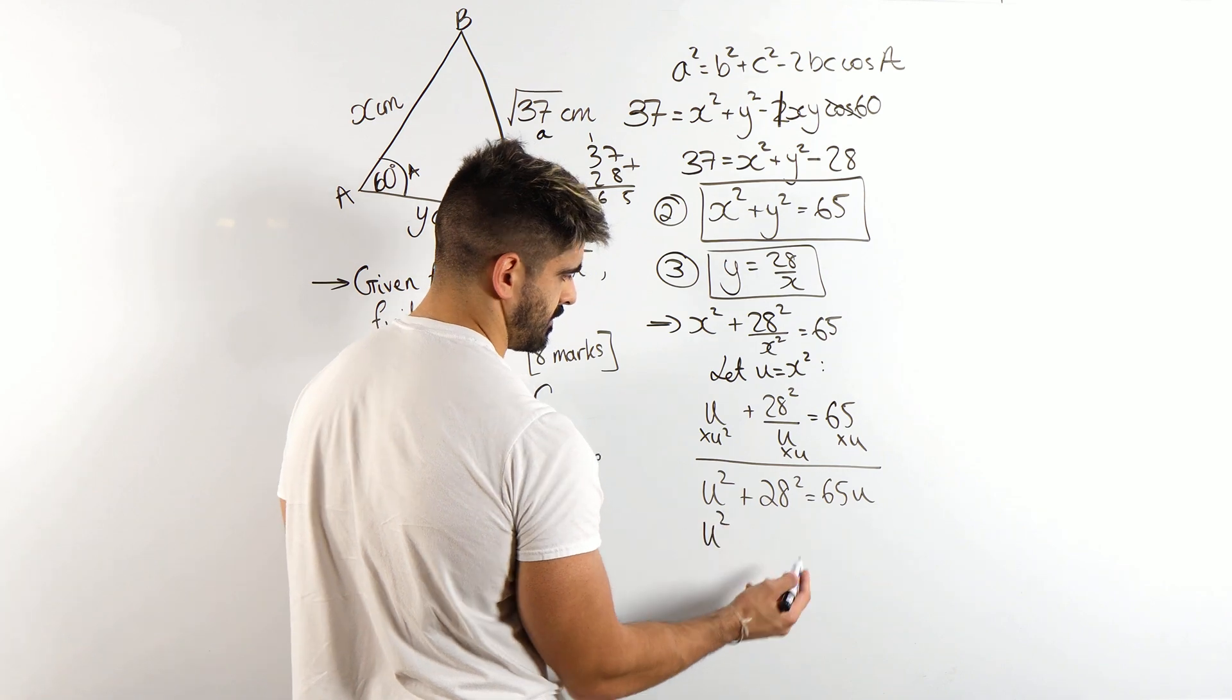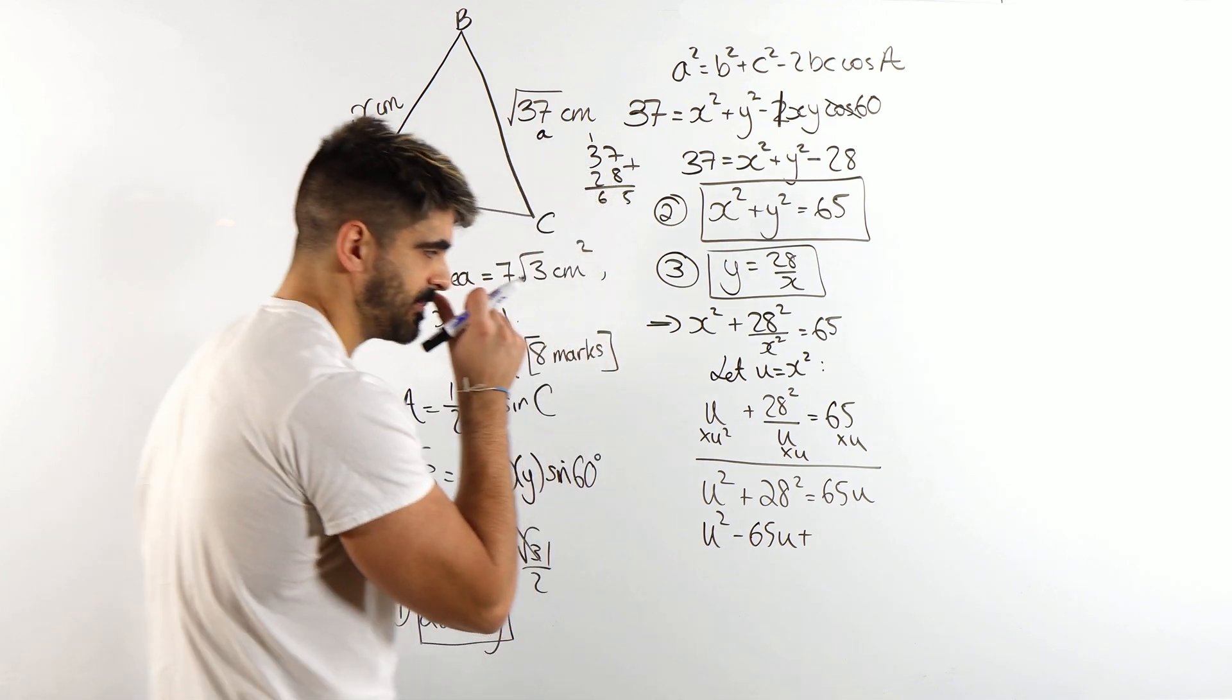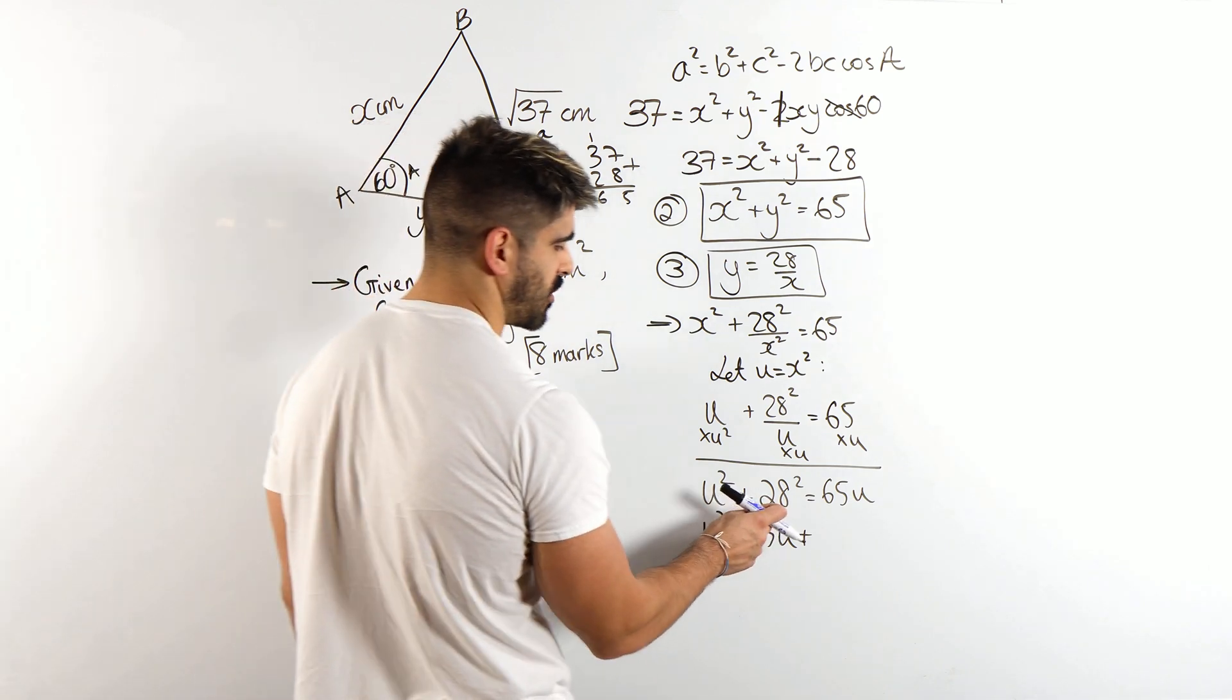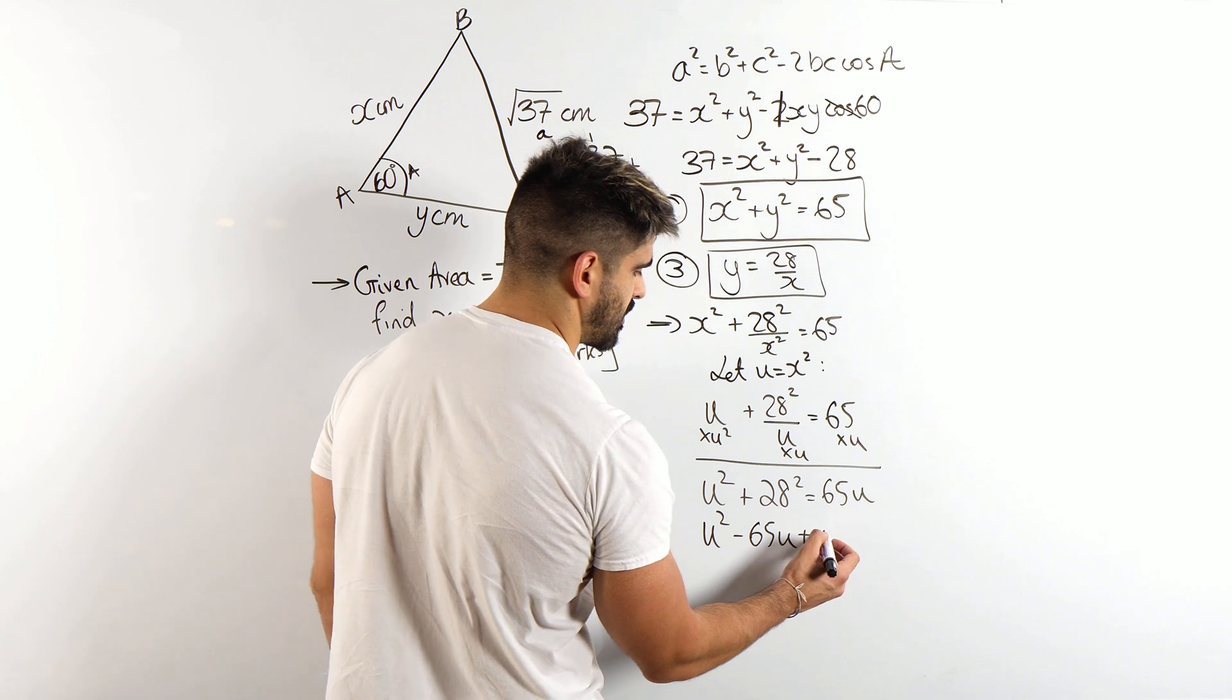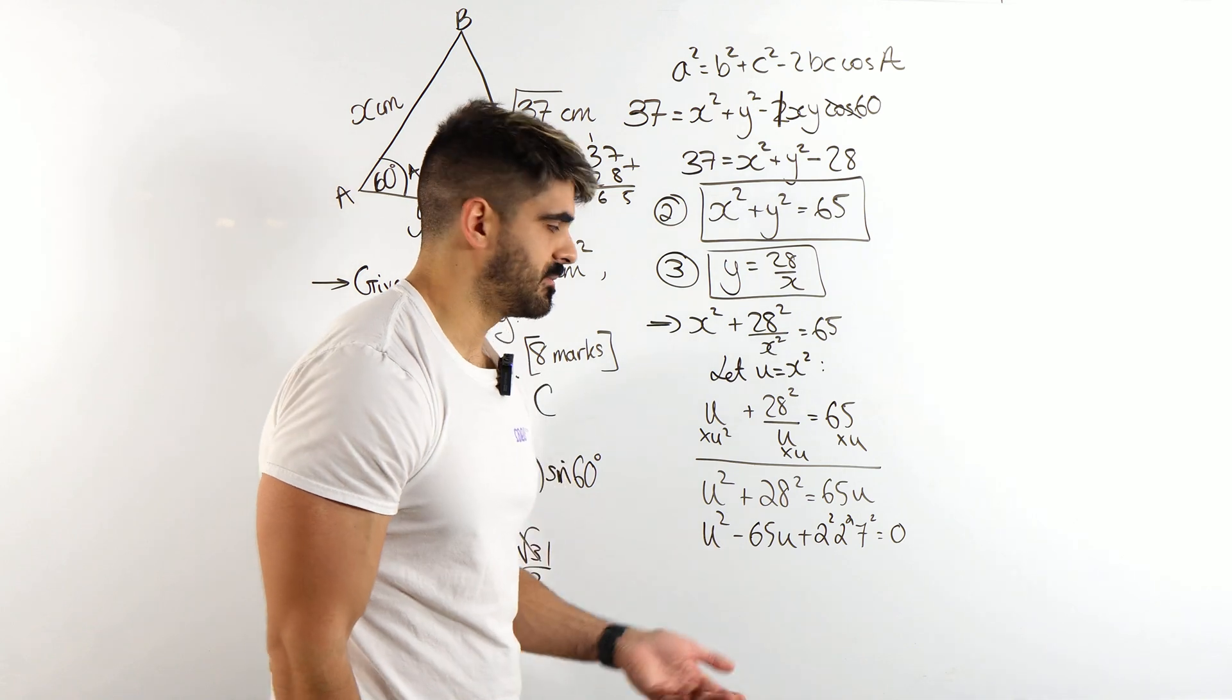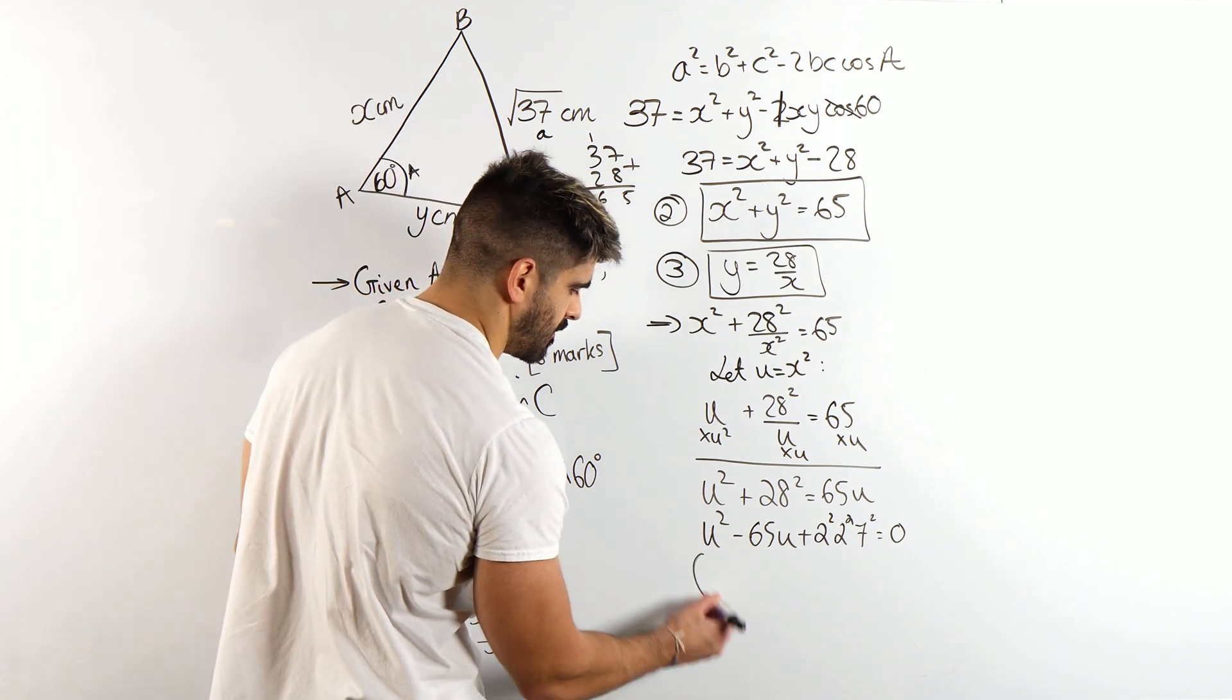We have u squared minus 65u plus 28 squared. And to be honest, I'm thinking if this wasn't on calculator and with 28, we're going to have to list out the factors. It shouldn't be too difficult. Another way you could do it is you could rewrite 28 in terms of those prime factors. So it's 4 times 7. So 2, 2, 7. So it'd be 2 squared, 2 squared, 7 squared. Because yeah, 28 is 4 times 7. And then 4 is 2 times 2. But then you have to square that. So you're looking at the combinations which could give you 65. Interesting.